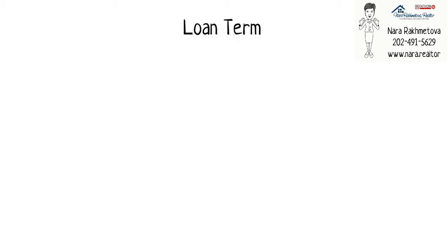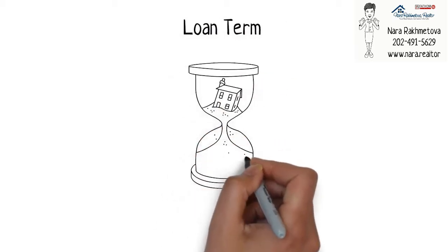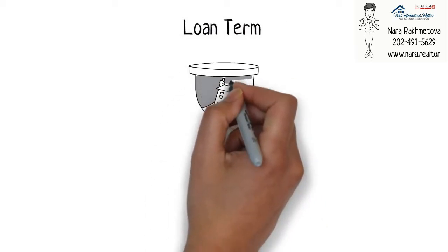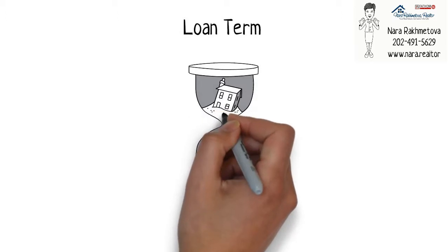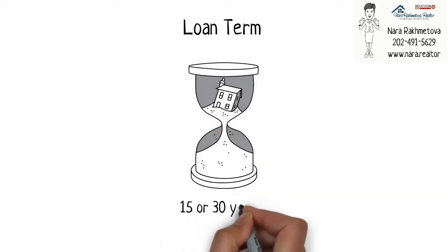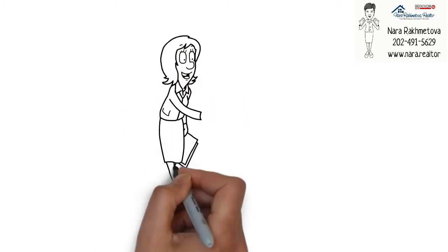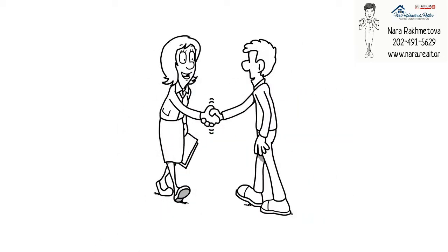Loan Term: The loan term is the length of time it will take the borrower to repay the loan, like 15 or 30 years, with payments usually being made on a monthly basis. Should you have any questions, ask your realtor or lender.